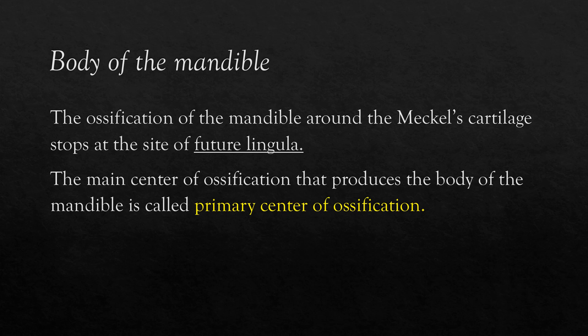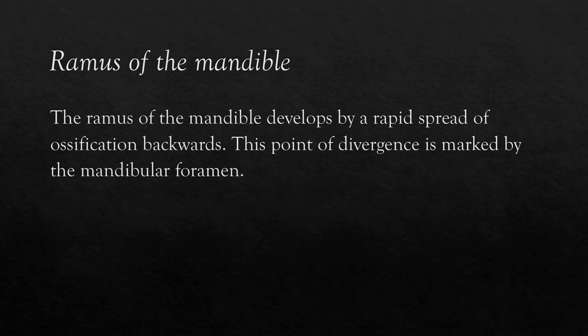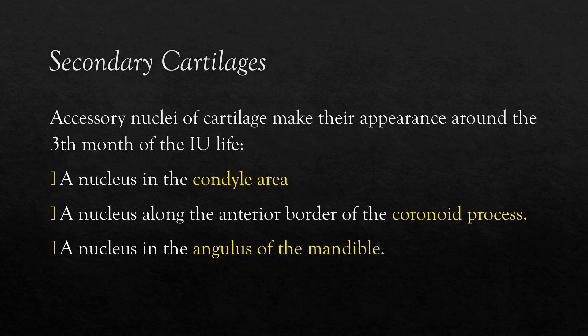The ossification stops at the site of the future lingula. By this process of growth, the original primary center of ossification produces the body of the mandible. The ramus of the mandible develops by a rapid spread of ossification backwards, making a divergence at the level of the mandibular foramen. Three accessory nuclei of cartilage appear around the third month of intrauterine life: one in the condyle area, one in the coronoid area, and one in the angle of the mandible. Except for the condylar cartilage, which has a crucial role in the growth of the mandible, the other two secondary cartilages are completely ossified at birth. Except for this area, the mandible shows intramembranous ossification.